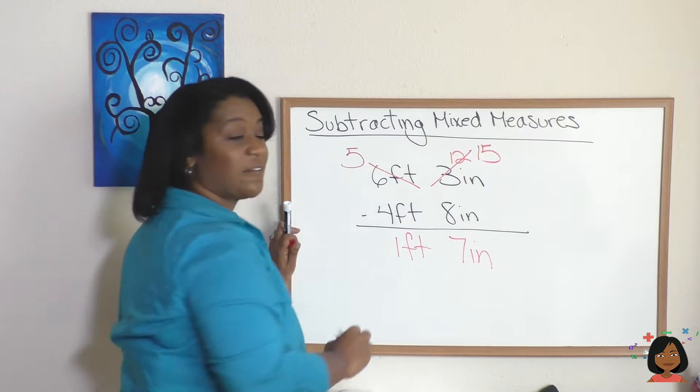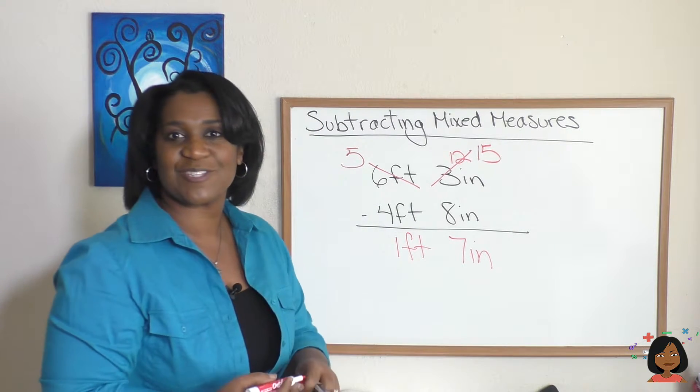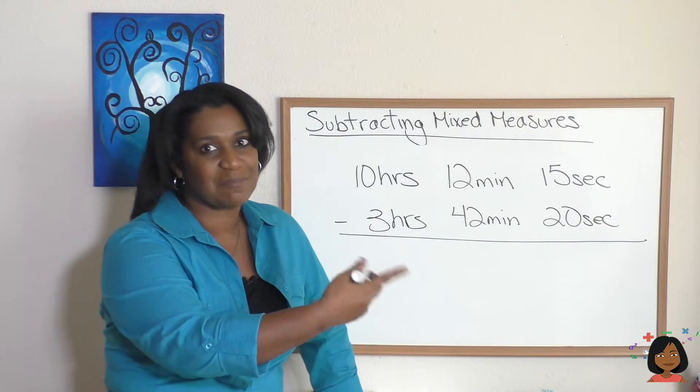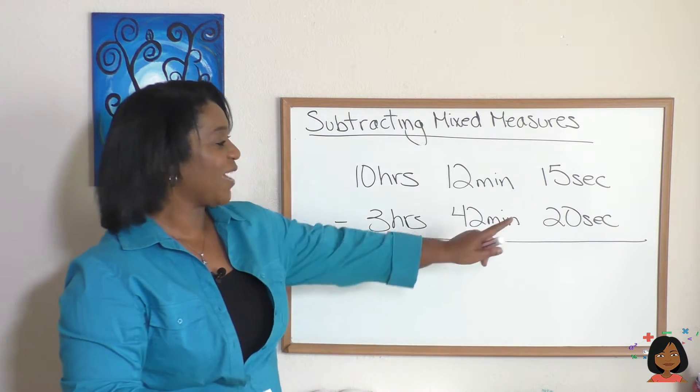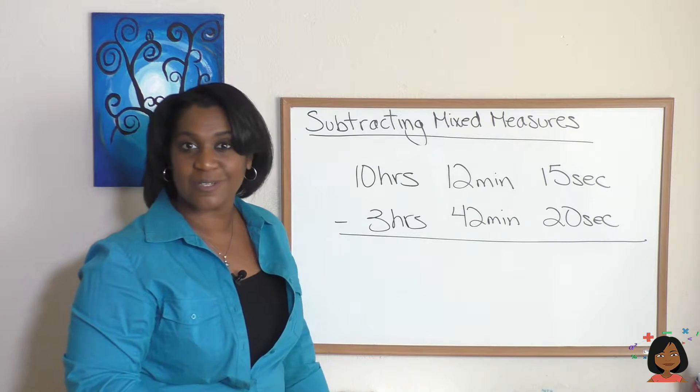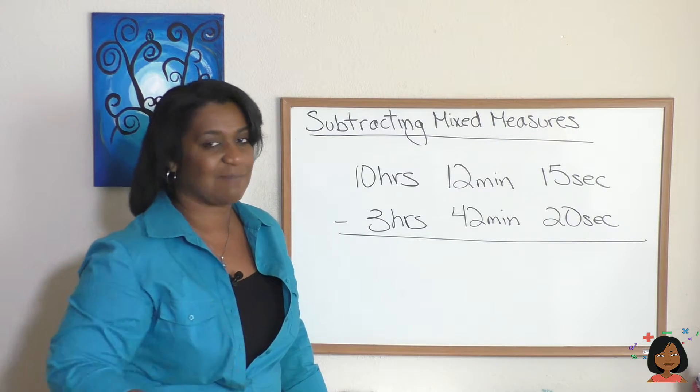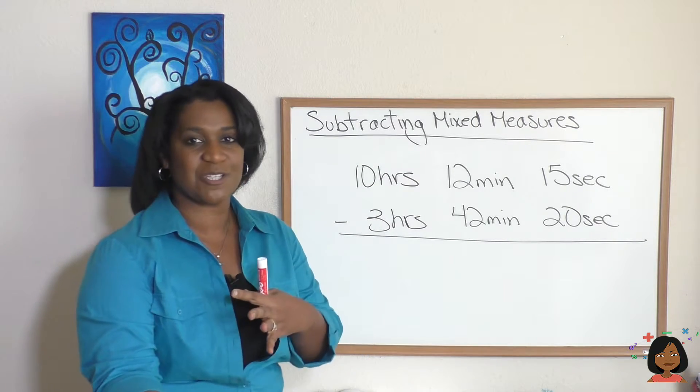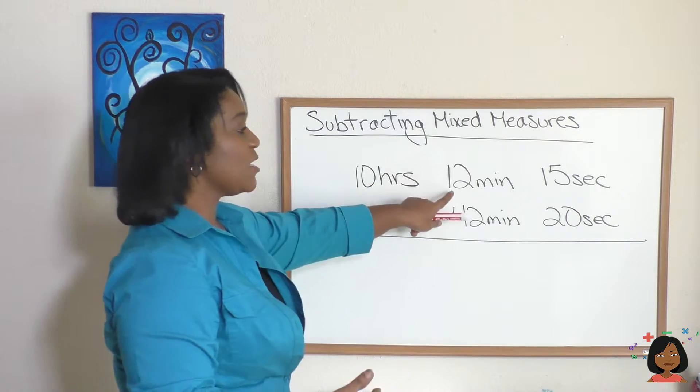I couldn't leave you without giving you a problem that had three mixed measures. So we've got seconds, minutes, and hours. The process is still the same. You see 15 and 20, we have an issue. So what do we do? We regroup.